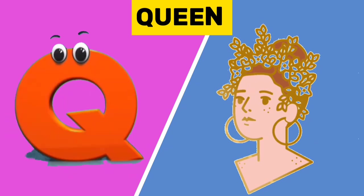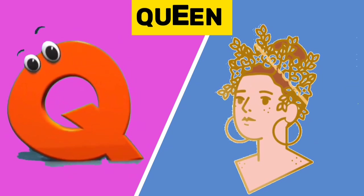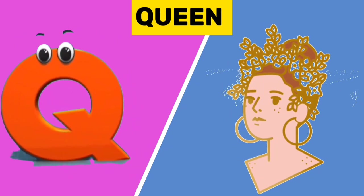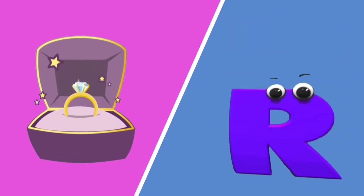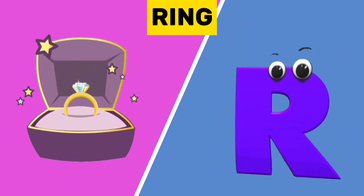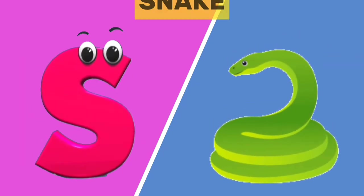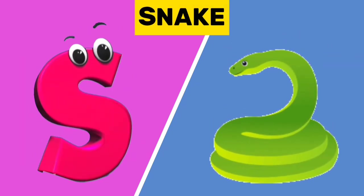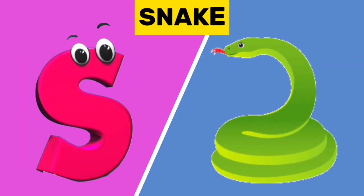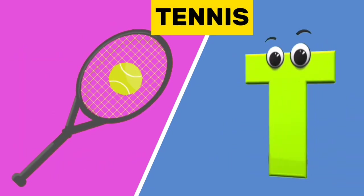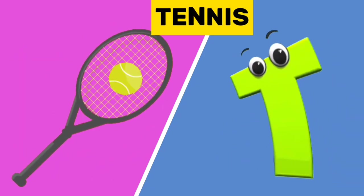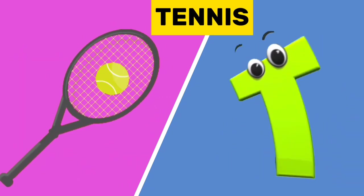Q is for queen. Qu, qu, queen. R is for ring. R, r, ring. S is for snake. S, s, snake. T is for tennis. T, t, tennis.